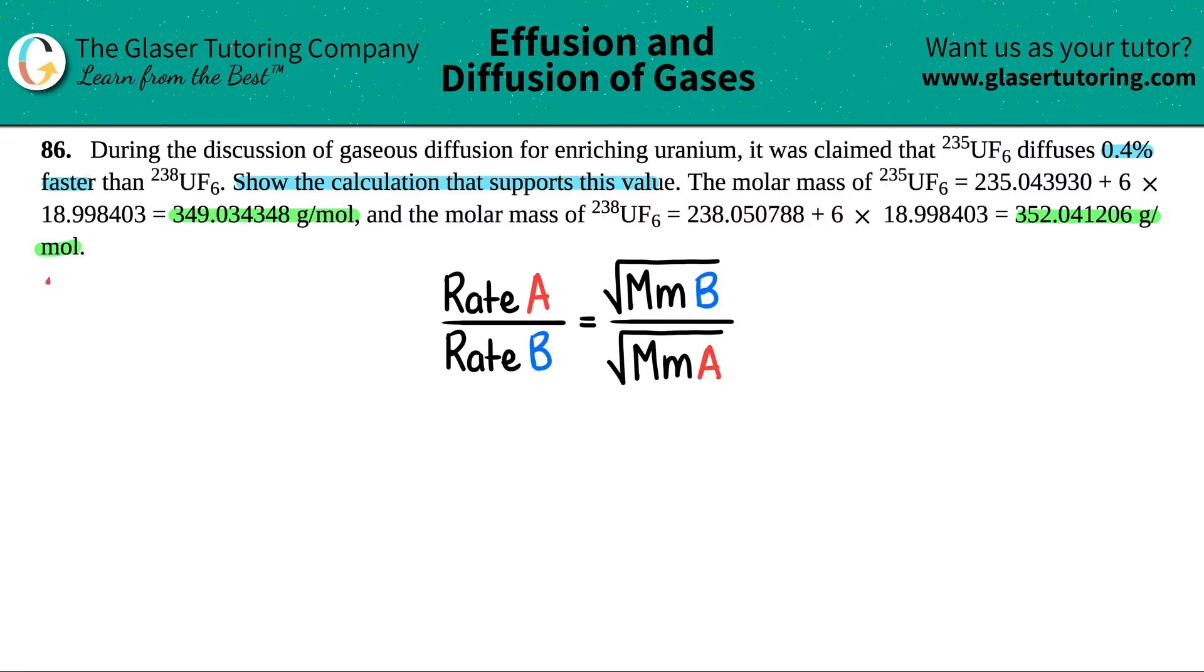So I'm just going to label it out that A is the 235UF6, and then B is 238UF6.